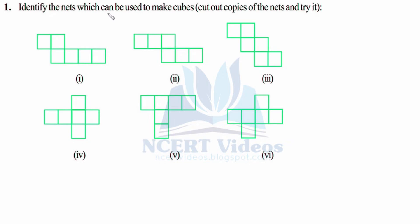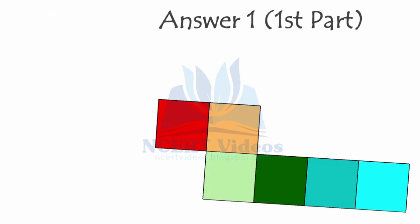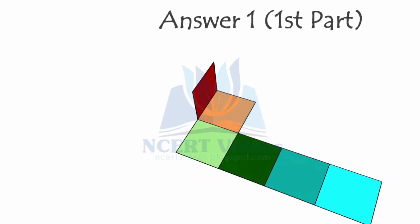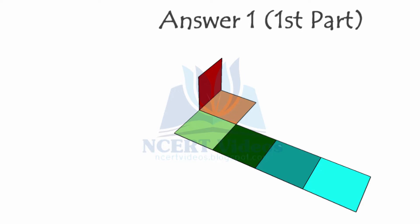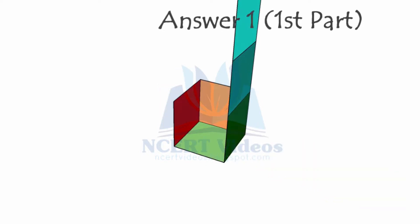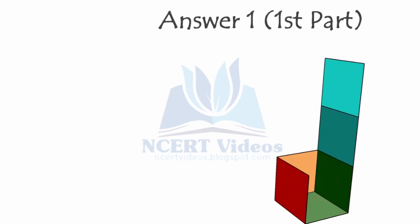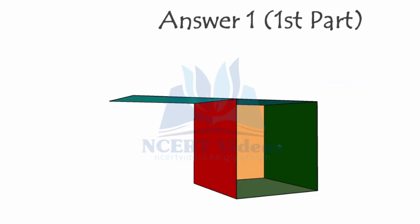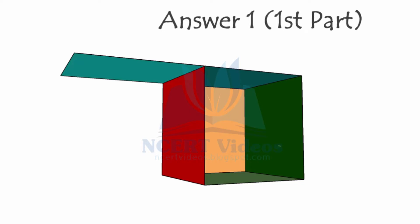Question one: identify the nets which can be used to make cubes - cut out copies of the nets and try. Here we have the first net and we have to show whether we can construct a cube out of it. This is our first move - we will fold the red square first, as shown in the figure, then turn this way, then turn from the green fold. Clearly you can see that this net will not make a cube.